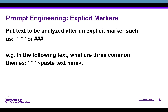It can also be very helpful to provide explicit markers whenever we're going to upload text. Saying 'according to this text' can be very helpful for the AI to have some marker of the text to follow. Common techniques are to provide three quotation marks — these are double quotation marks — or alternately three hashtags. For example, we might say 'in the following text, what are common themes,' and then paste our text after a series of quotation marks.